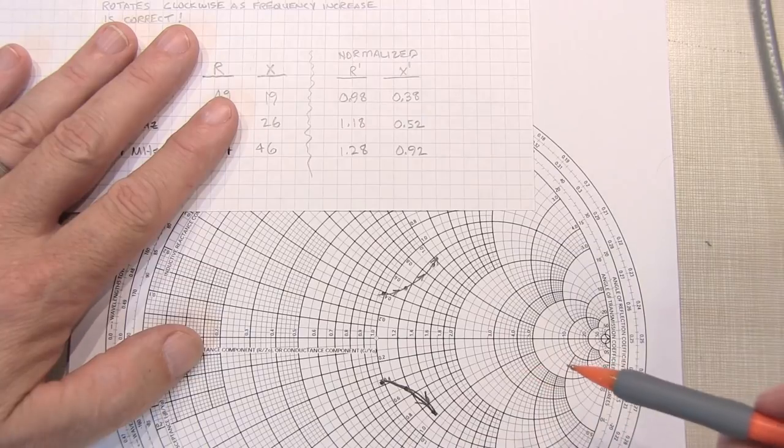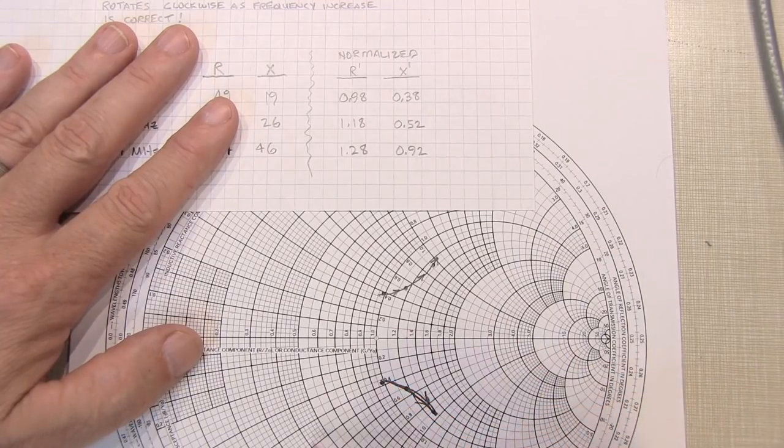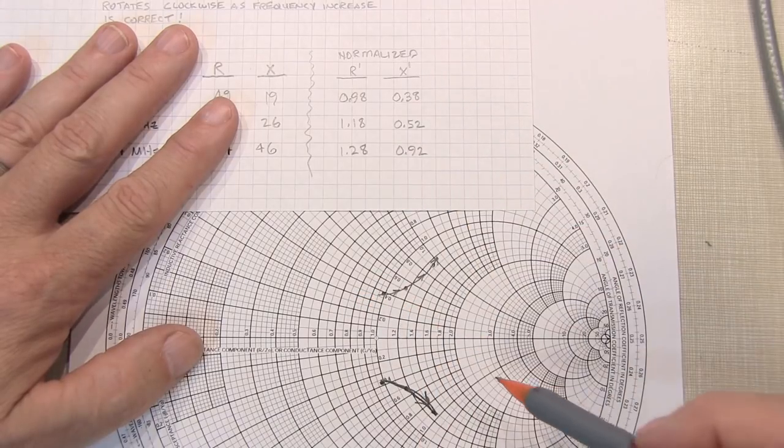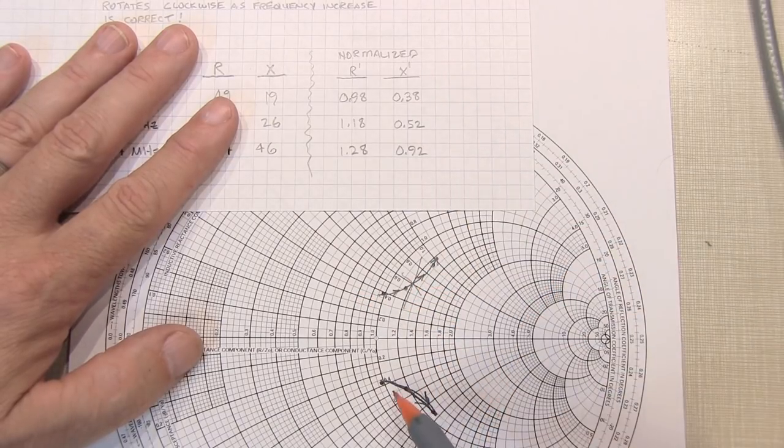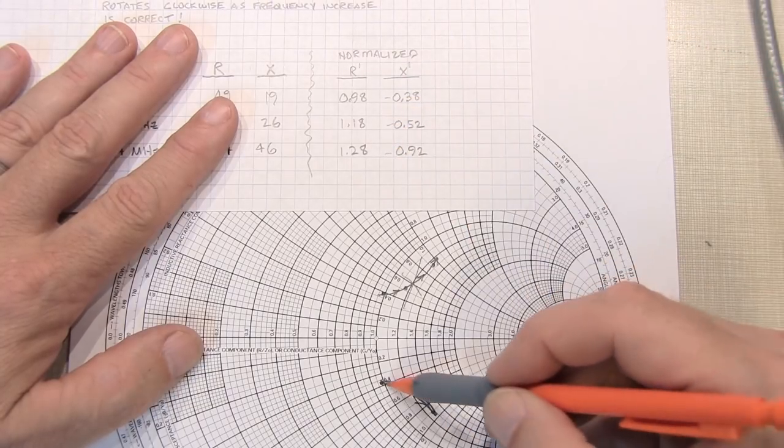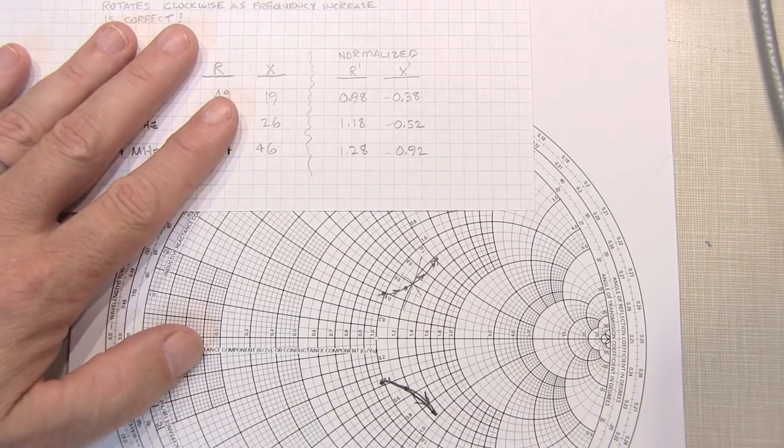Now if we take a look at these two curves, this is the one that's going in a clockwise direction. This one is rotating in a counterclockwise direction, so that's not the right answer. This tells us that the X component here is indeed negative, meaning that it is capacitive. We're on the lower half of the Smith chart.